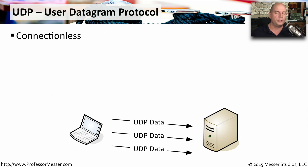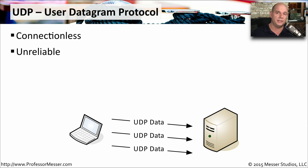The other major protocol used by IP is User Datagram Protocol, or UDP. UDP is a connectionless protocol, which means there's no formal setup. One station simply sends information to the other via UDP, and the information is received on the other side. Unlike TCP, there is no formal acknowledgment. The originating station has no idea if the information really made it to the other side. We call this unreliable communication — not because the network works any better or worse — but because the originating station never receives an acknowledgment.